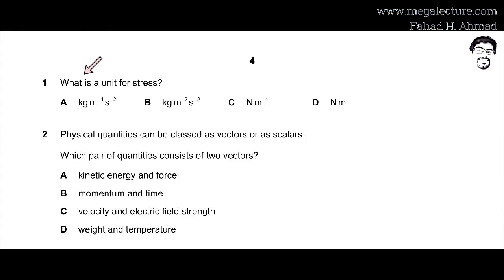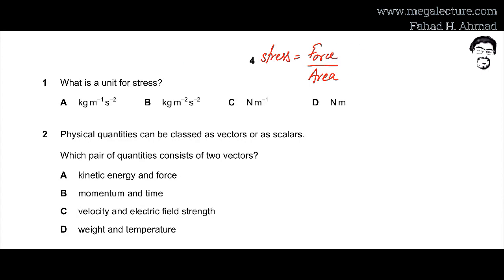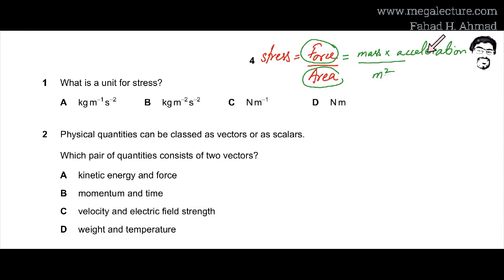MCQ number 1 asks: what is a unit for stress? Stress is force over cross-sectional area. The formula for force is mass times acceleration. Area is always in meters squared, mass is in kg, and the unit for acceleration is meters per second squared.